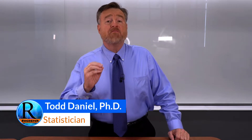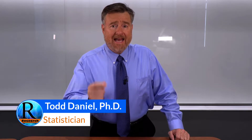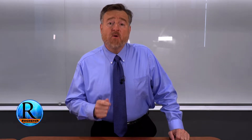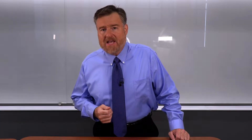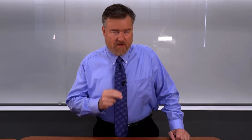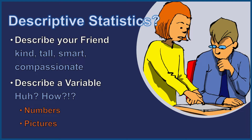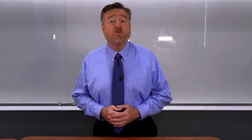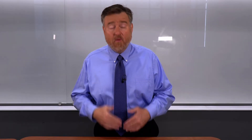Good morning. I want to begin this week on basic business statistics by reviewing where we've been and how we got here. We have been focusing on descriptive statistics. You may recall that I asked you to describe two things: a friend and a variable. We found that it was very easy to describe a friend, but describing a variable isn't so easy. So I taught you descriptive statistics, and now we know how to describe a variable.